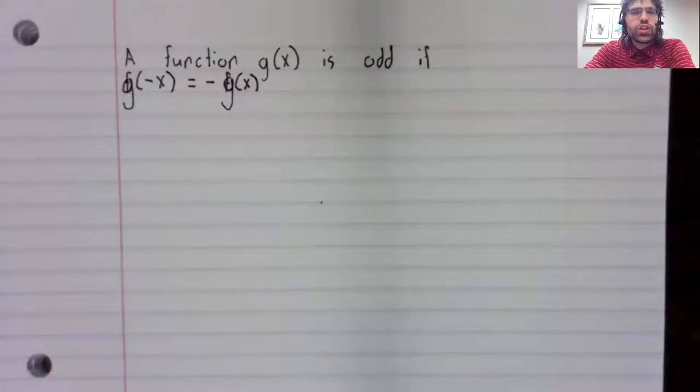The definition of an odd function starts the same but diverges at the end. A function g(x) is odd if g(-x) equals negative g(x) for all x.